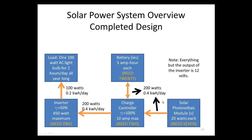We're finished with our solar power calculation. To summarize: we need 1 inverter, 2 charge controllers, 20 batteries, and 7 solar modules. The next step would be to see how expensive this system would be — I'll leave that as an exercise for you. Thanks for watching.